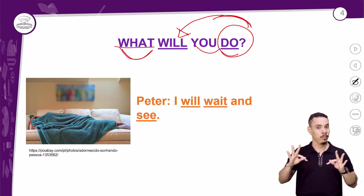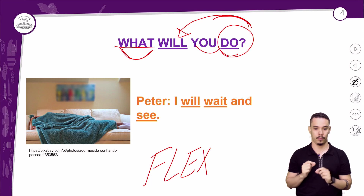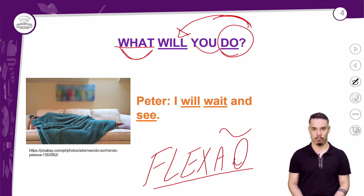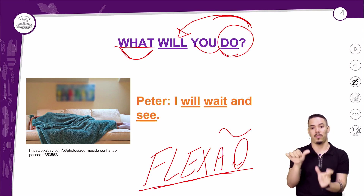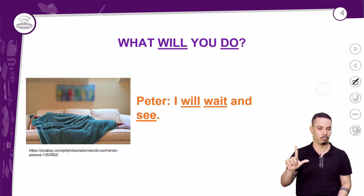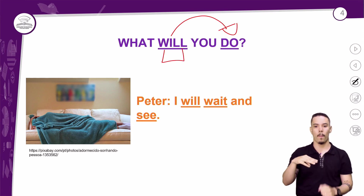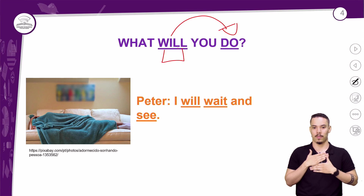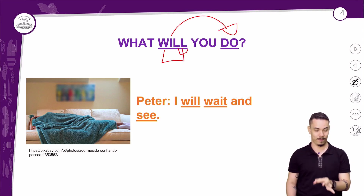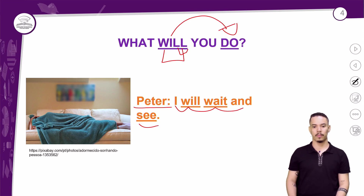Every time you use the future with 'will,' you don't need to worry about verb conjugation — there is no verb inflection in any sentence with the future with 'will.' What makes my main verb future is precisely the presence of this modal verb, 'will.' 'Wait' is the verb, and 'will' is what puts it in the future. So 'I will wait and see' — Peter is tired, he'll wait and see.